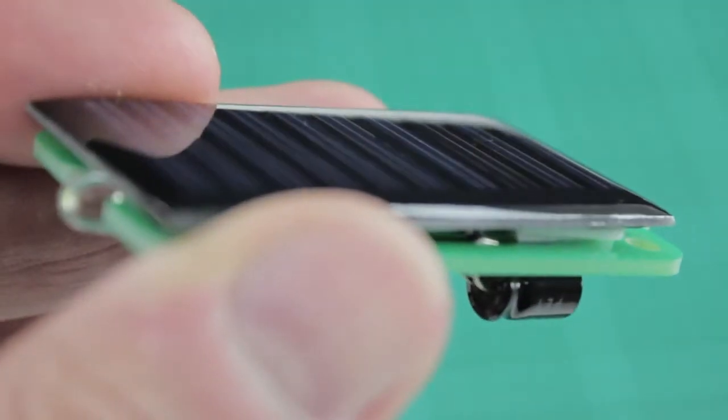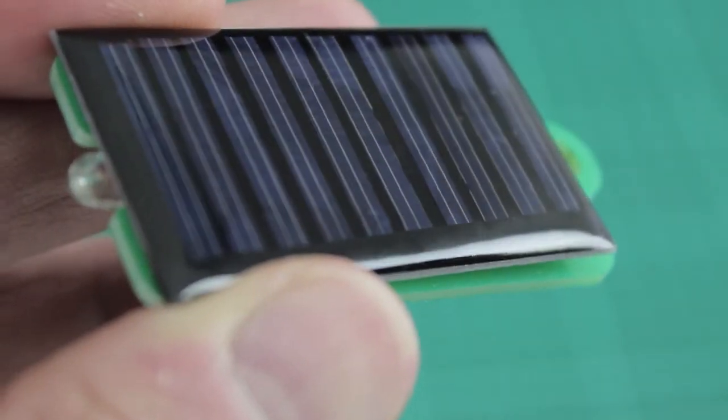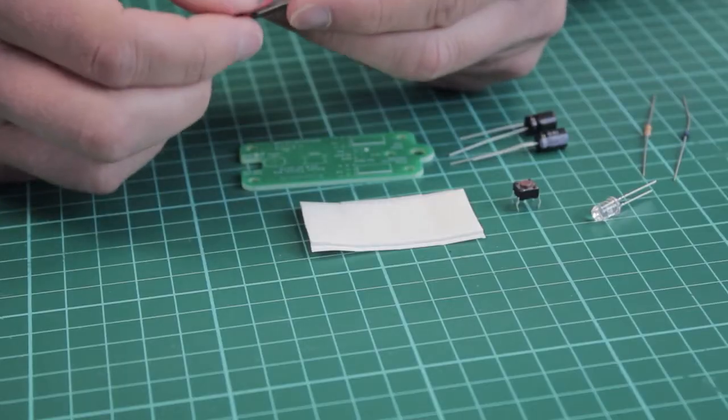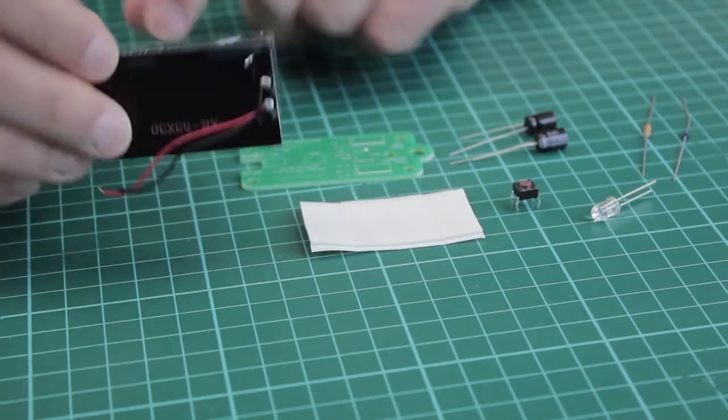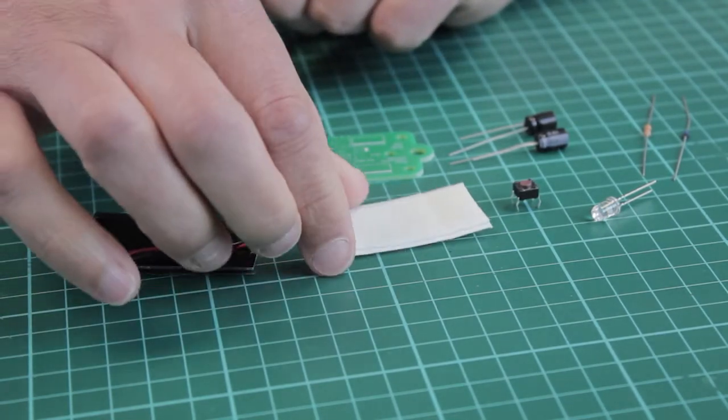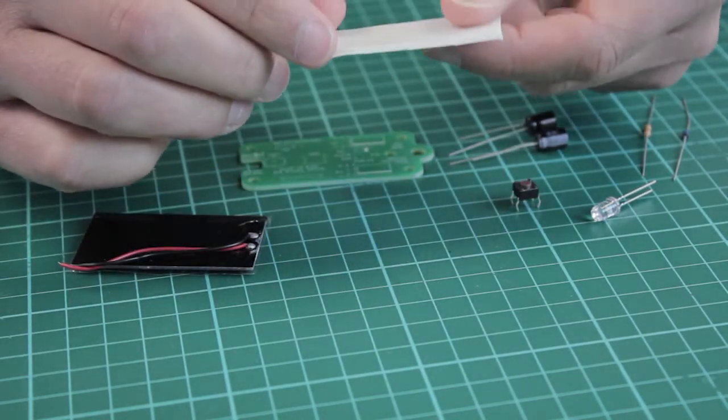We then have a solar cell here which is the same size as the PCB. We can see the connection wires on the back, and then to mount this onto the PCB we also supply these mounting pads, double-sided foam pads that can be used to stick the solar cell to the PCB should you wish.